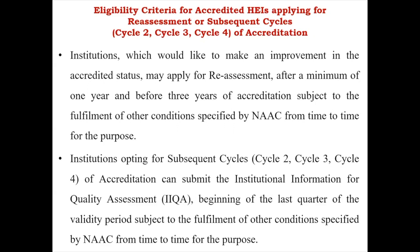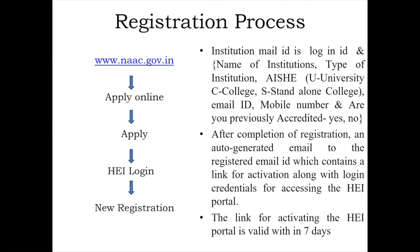For example, if previously when you were accredited you were affiliated, but now you have become autonomous, you have to fulfill the autonomous condition as well, which is five years. For subsequent cycles — cycle two, cycle three — institutions must apply during the last six months of the validity period for NAAC assessment and accreditation.